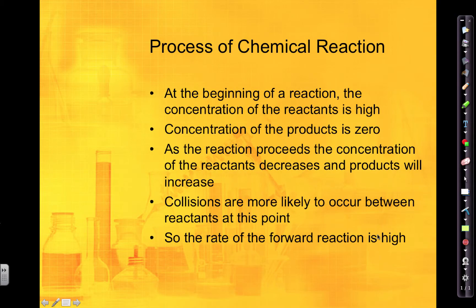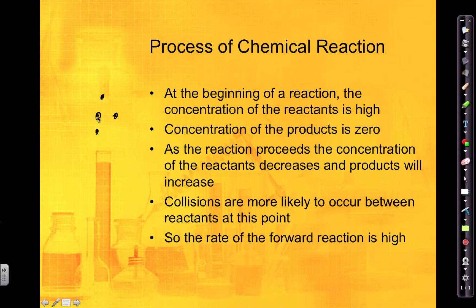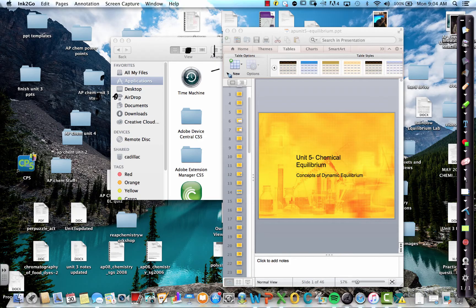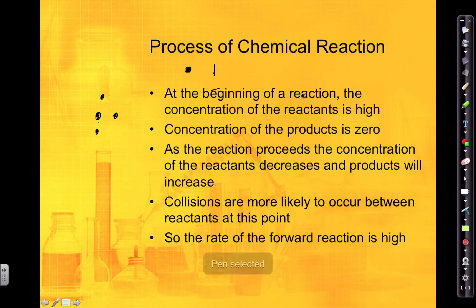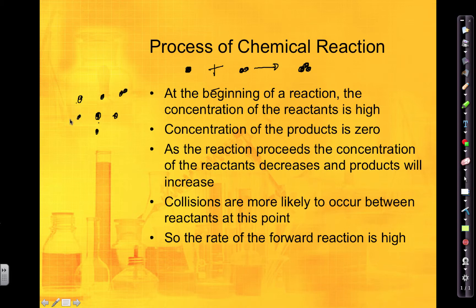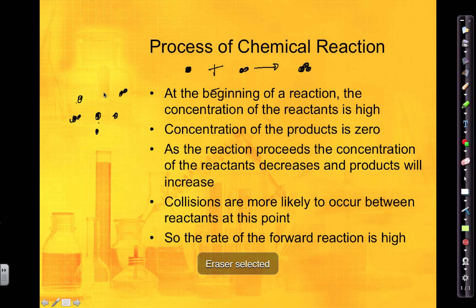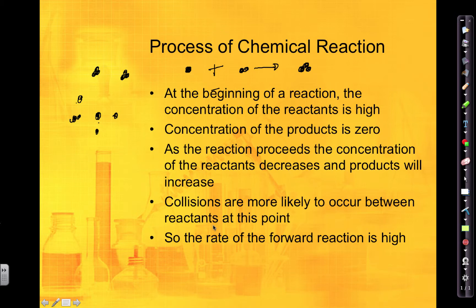The way a chemical reaction works is that at the beginning of the reaction, the concentration of the reactants is high — so you have lots of reactants. As the reaction proceeds, the concentration of the reactants will decrease, and you'll begin to make more and more of your product. Collisions are more likely to happen between the reactants at this point because the concentration of the reactants is so high.